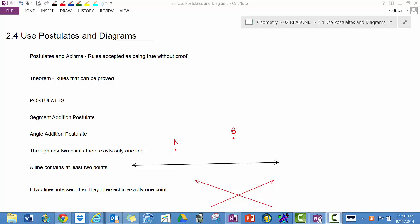You will use postulates involving points, lines, and planes in this section. Postulates are rules accepted as being true without proof. Theorems are rules that can be proved.